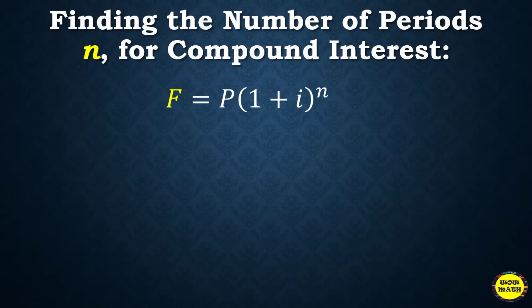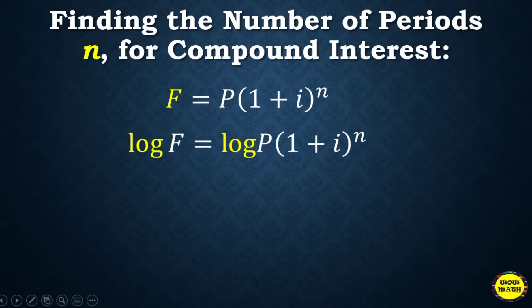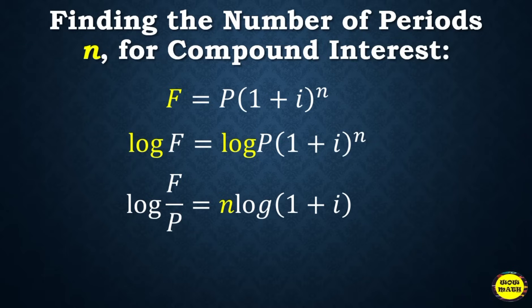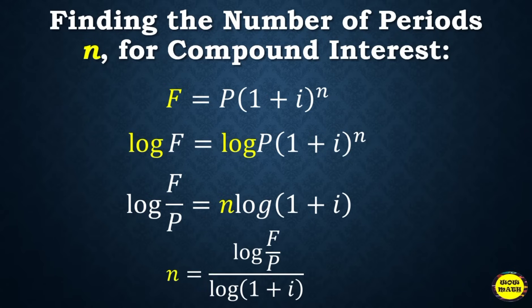We are using the formula F = P(1 + i)^n. To find n, we express the answer using logarithms: log(F/P) = n × log(1 + i). Or you can go directly to the formula n = log(F/P) / log(1 + i). Make sure the values of future value, present value, and i are clear to you.